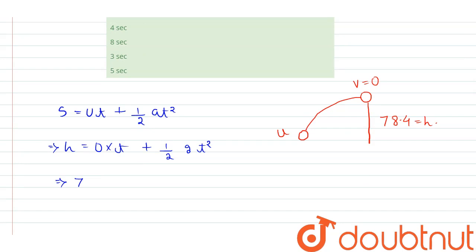g×t². From here we get 78.4 = (1/2)×g×t². Rearranging: 78.4×2 = 9.8×t².